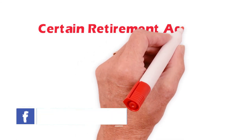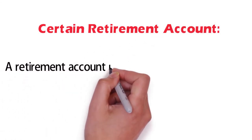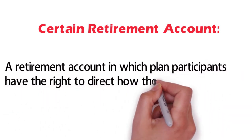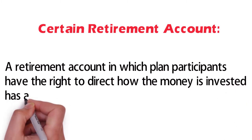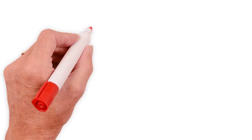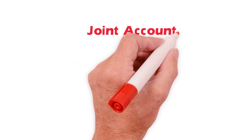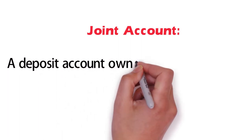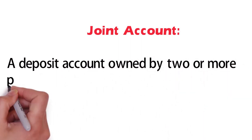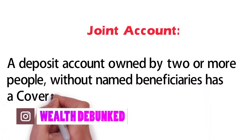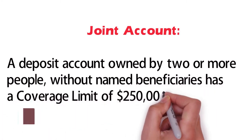A certain retirement account — a retirement account in which plan participants have the right to direct how the money is invested — has a coverage limit of $250,000 per owner. A joint account — a deposit account owned by two or more people without named beneficiaries — has a coverage limit of $250,000 per co-owner.